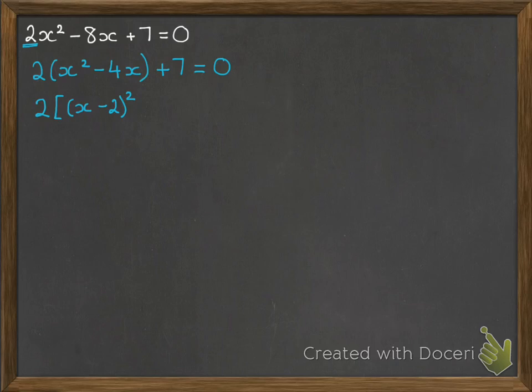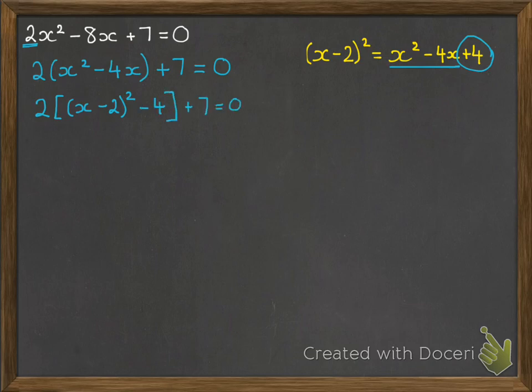Now we'll do completing the square on that part there, so take the x and half of the 4, put that into the bracket. Over at the side, work out what that is. Now we only actually want those first bits, so that's given us 4 too many, so we need to take off that 4. Then from there, we'll multiply out those brackets and simplify our equation, and then start rearranging to solve.